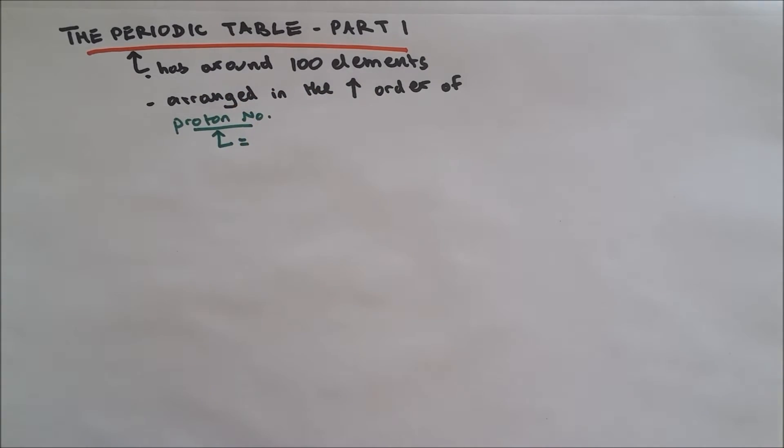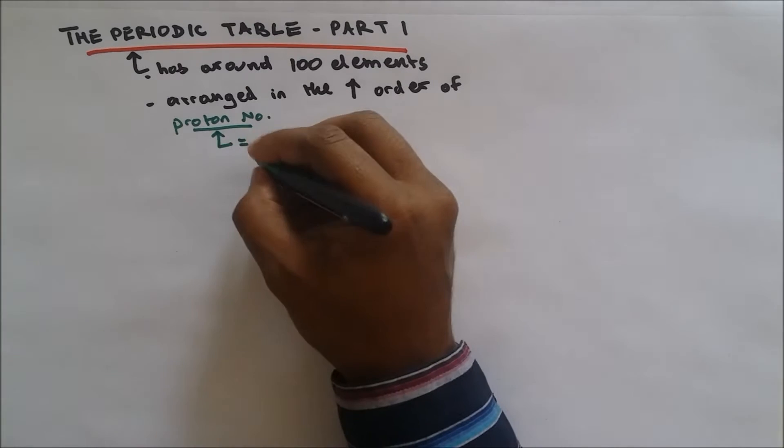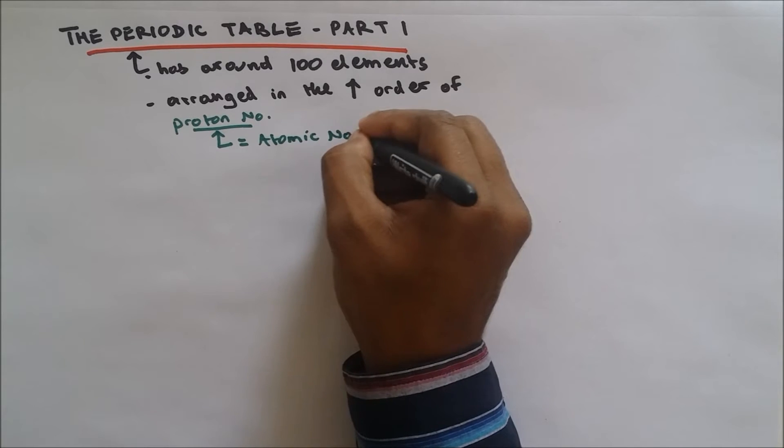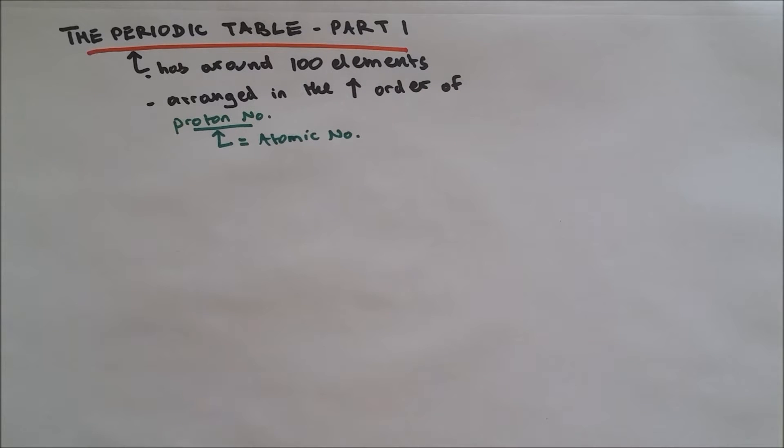Proton number has a different name which is called atomic number. Atomic number means the number of protons or can be also the number of electrons in an atom.